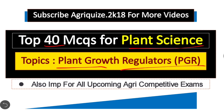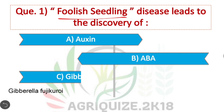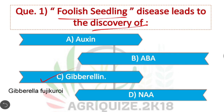Question 1: Foolish seedling disease leads to the discovery of — Option C is correct: Gibberellin. The foolish seedling disease was caused by infection of Gibberella fujikuroi, and the active substance was later identified as Gibberellin in plants.